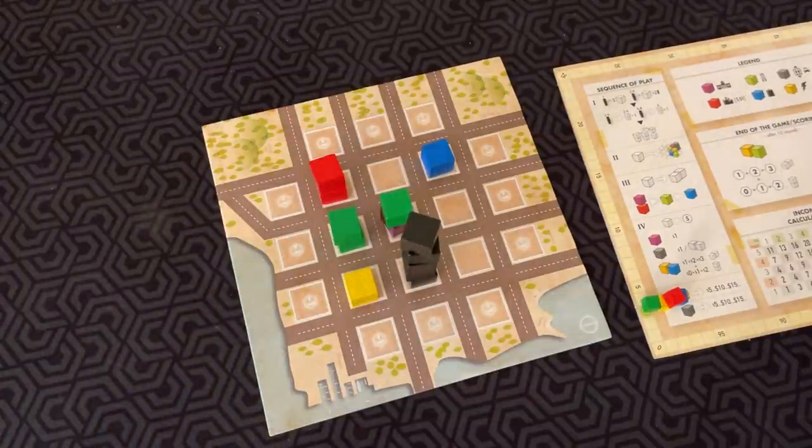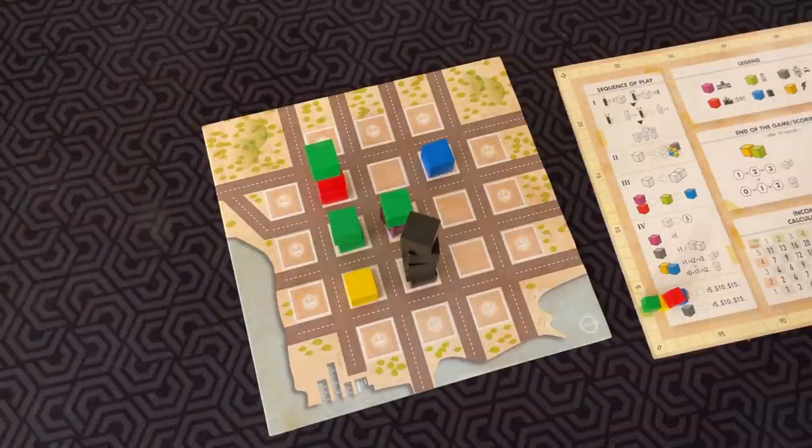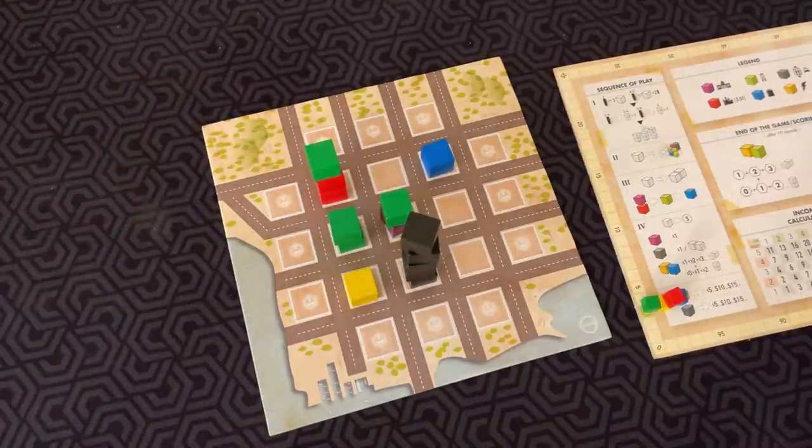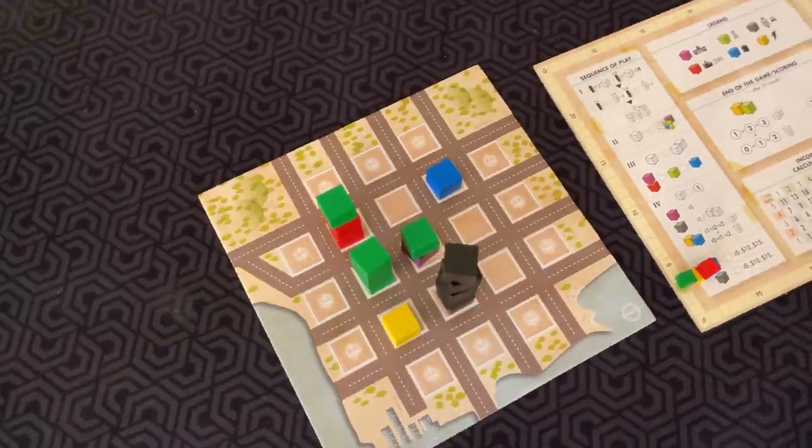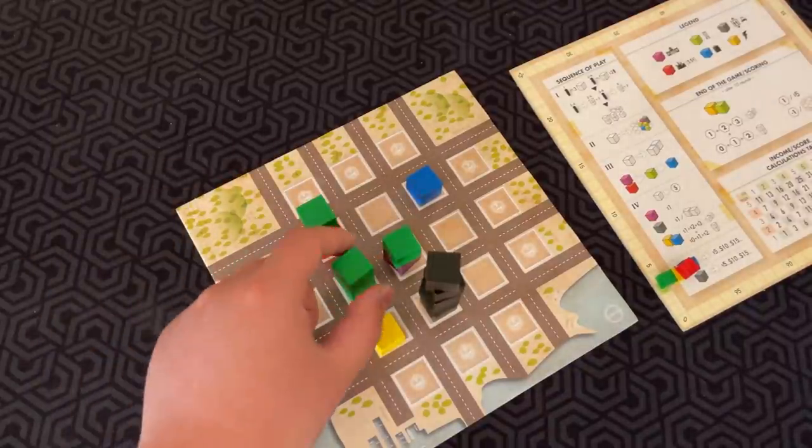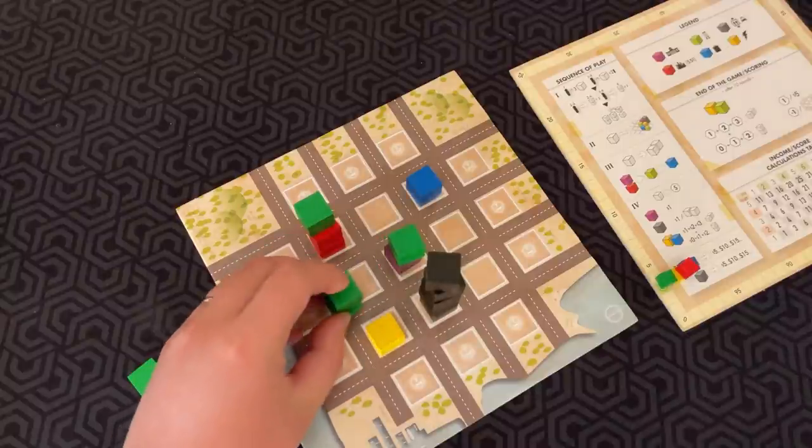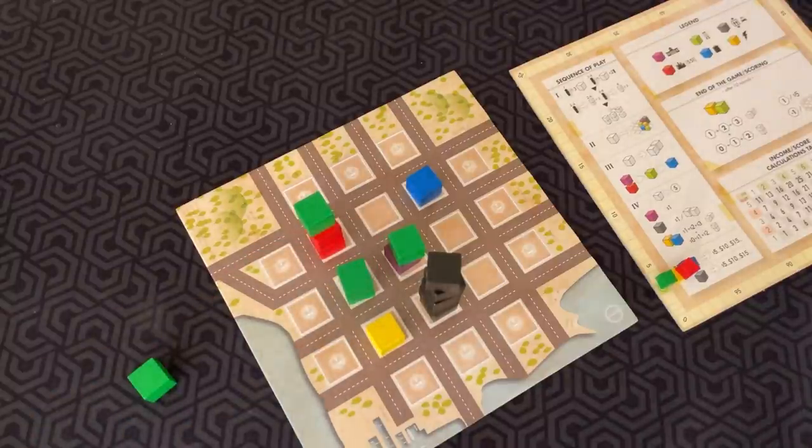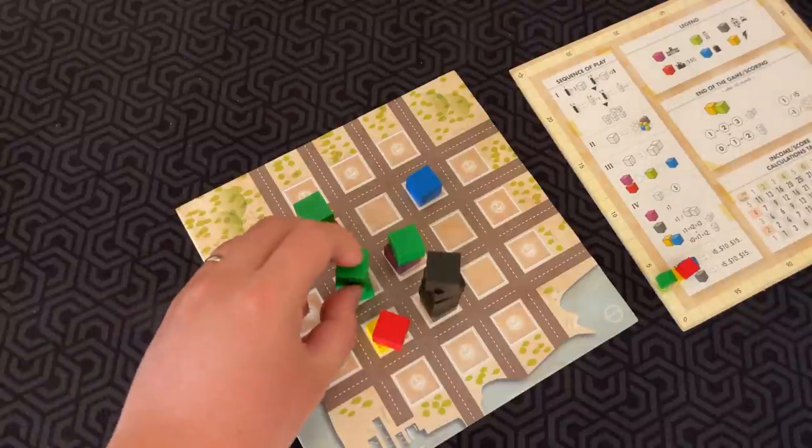Also, residential units can be merged into one larger unit. If I had one here and I connected them, they form into one residential unit. Of course, the only way this would have happened is if there were the appropriate number of office cubes next to it.